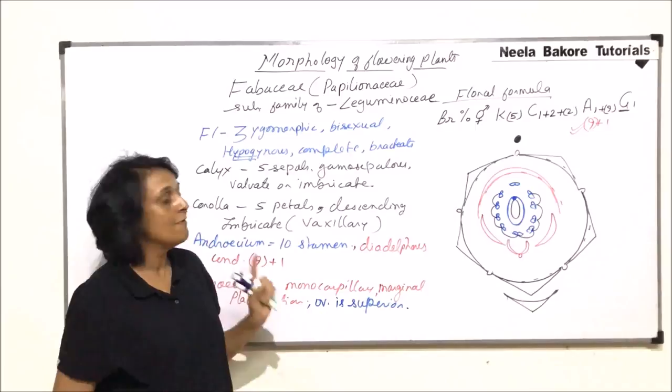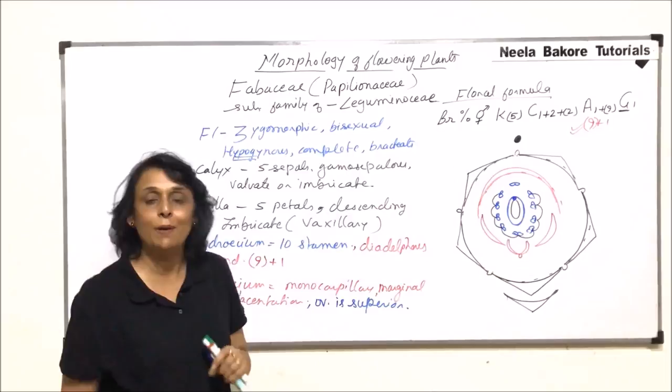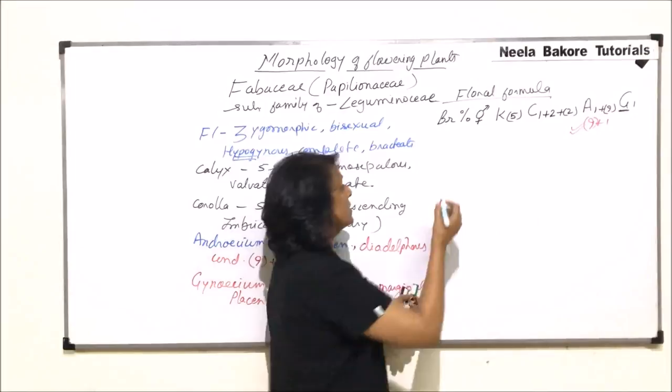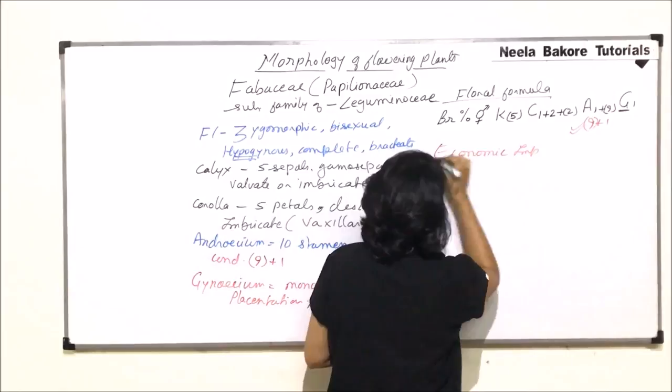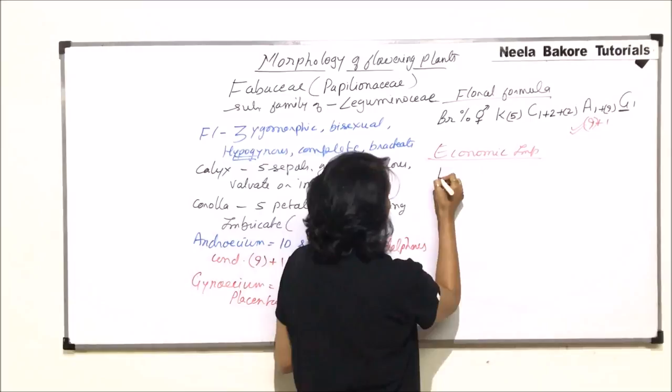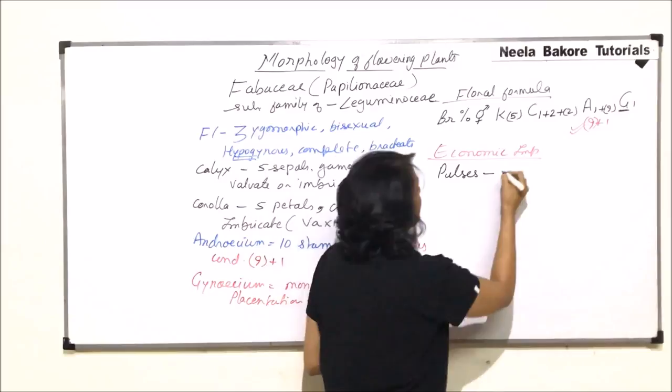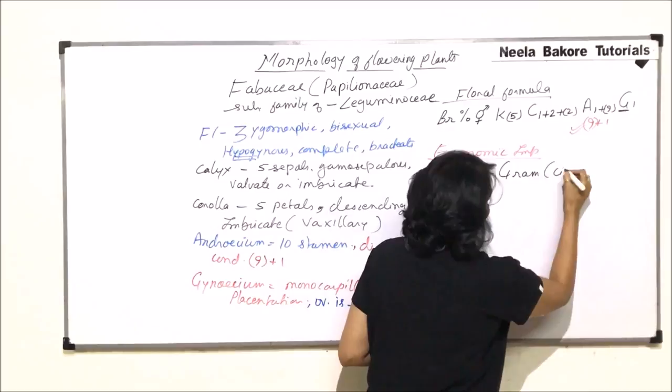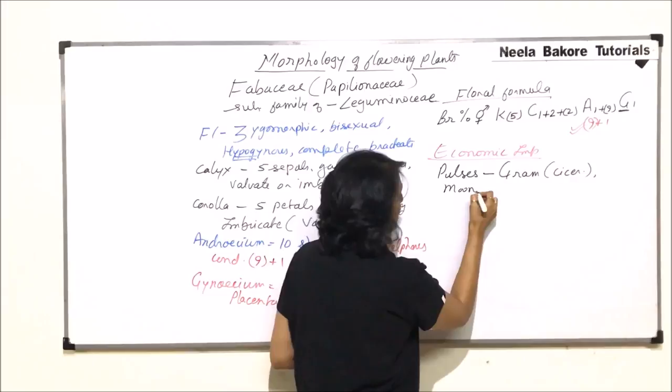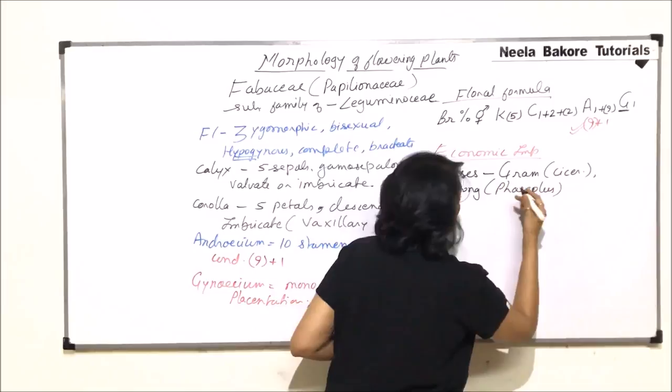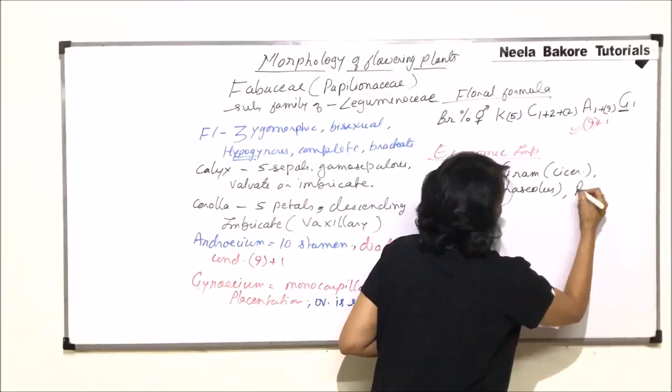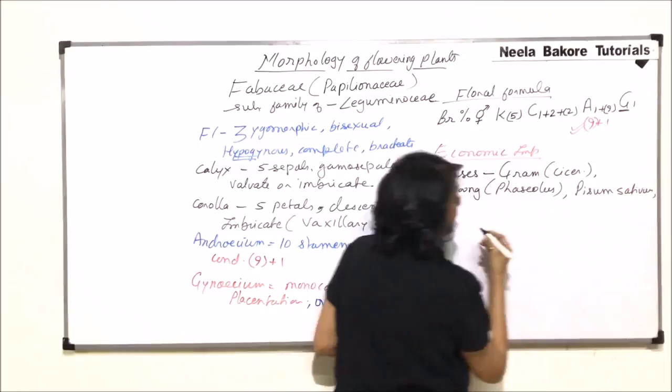So this is our floral diagram. Now coming to the plants of economic importance belonging to this particular family. Let us talk about some important plants belonging to this family. That means we are talking of economic importance. Most of the pulses which we are talking of, they come in this particular family. So when we write pulses, which all pulses are going to be included in this? That is gram, Cicer variety. Then we write moong, that is Phaseolus variety or the genus Phaseolus. Then we have Pisum sativum.